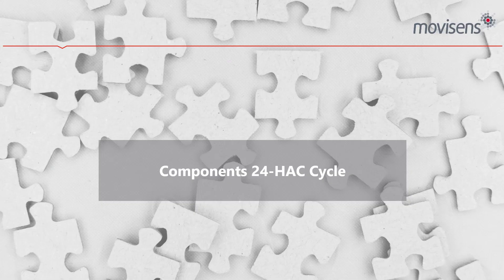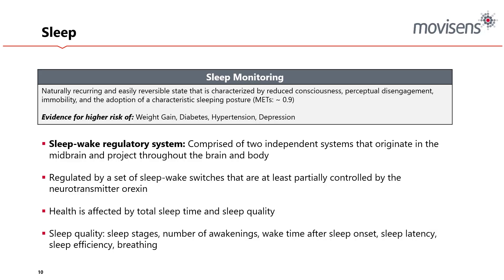Sleep monitoring: sleep is a naturally recurring and easily reversible state characterized by reduced consciousness, perceptual disengagement, immobility, and adoption of a characteristic sleeping posture. Poor sleep carries evidence for a high risk of weight gain, diabetes, hypertension, and depression, among many other things. Health is affected by both total sleep time and sleep quality — understanding sleep stages, number of awakenings, wake time after sleep onset, sleep latency, efficiency, and breathing. It's regulated by sleep-wake switches at least partially controlled by the neurotransmitter orexin, comprising two independent systems originating in the midbrain.